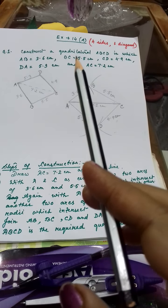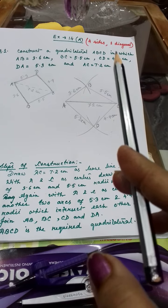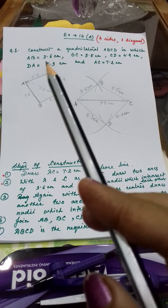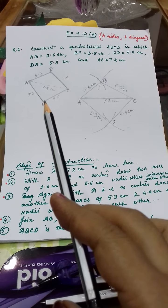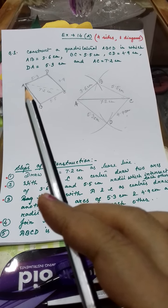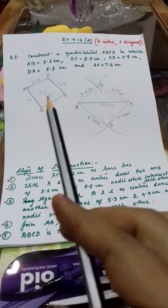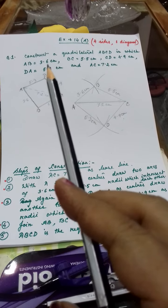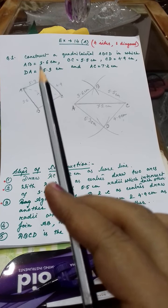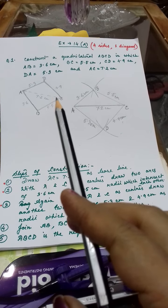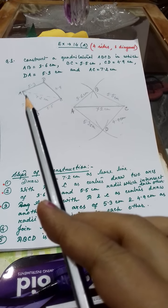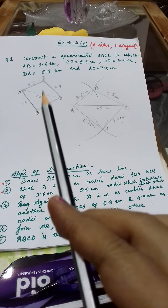DA = 5.3 cm and AC = 7.2 cm. As I told you earlier, first we have to draw a rough sketch freehand. Why do you draw the rough sketch? So that you can find out the two clear triangles from the quadrilateral and see which measurements are given to you. In this rough sketch I have mentioned all the given measurements — four sides and one diagonal.